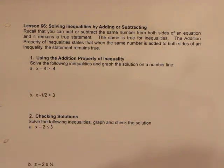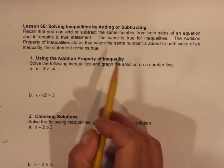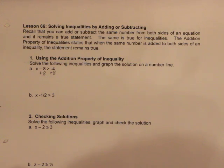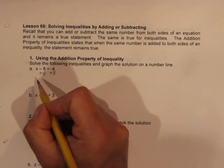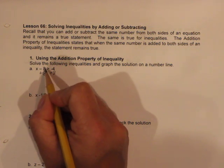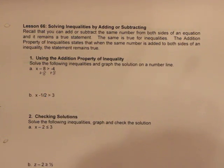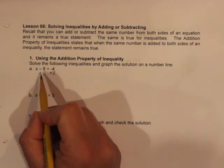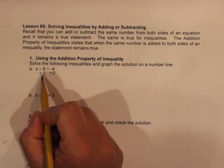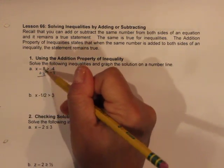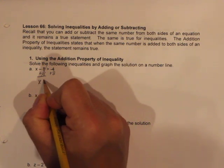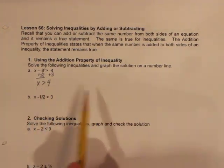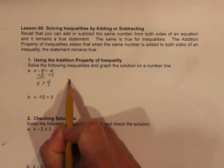For letter A, x minus 8 is greater than negative 4. The addition property of inequality tells us that as long as we move the same number to both sides, the statement remains true. Since x minus 8 is greater than negative 4 would be difficult to visualize on a number line, I'll move the 8 to both sides — it becomes zero on the left, and negative 4 plus 8 is 4. So x is greater than 4.